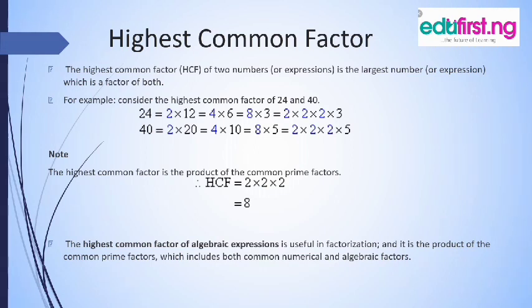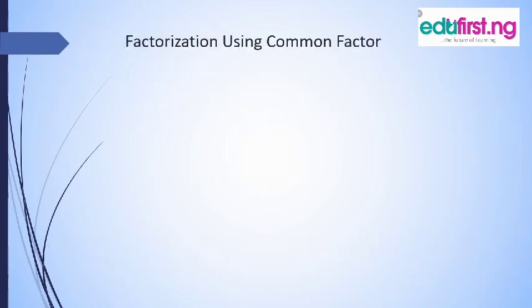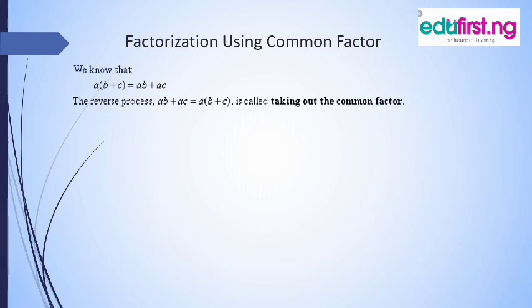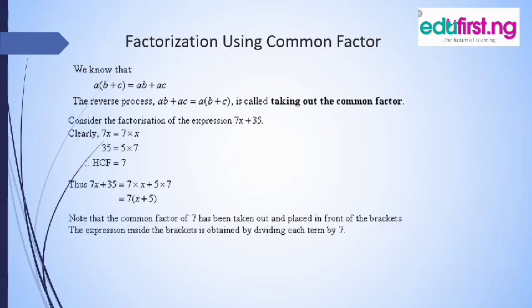If we understand that, then how can we factorize using common factor? We can factorize using common factor. We know that A times the bracket B plus C, opening this bracket, A multiplied by B will give us AB, and A multiplied by C will give us AC. We can also have the reverse process. Since A is common to both AB and AC, we factorize by taking out the common factor A. So we have A into the bracket of B plus C.